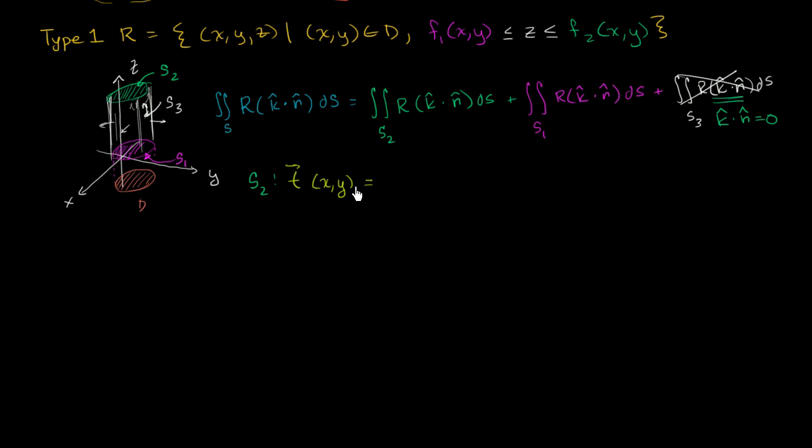And it's going to be equal to, and we can do this once again because we're dealing with our surface is a function of x and y. So it's going to be equal to x times i plus y times j plus f2 of xy times k for all the xys that are a member of our domain.